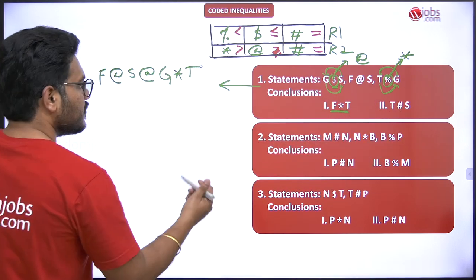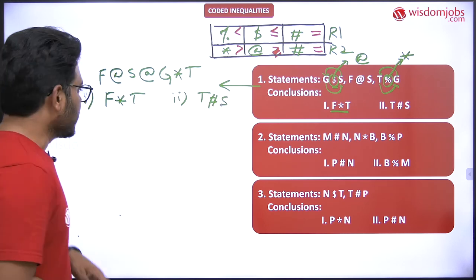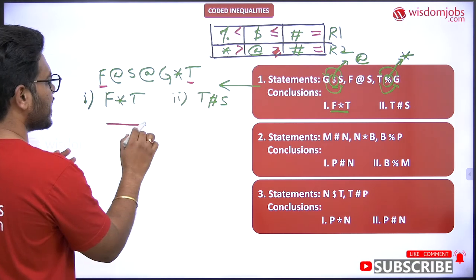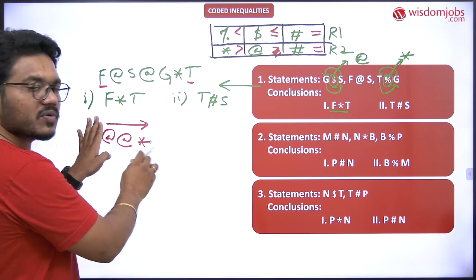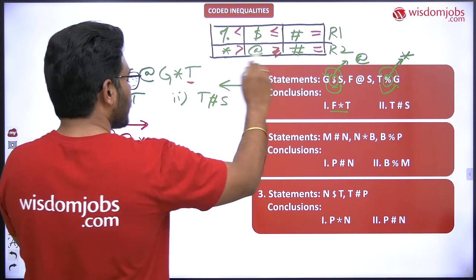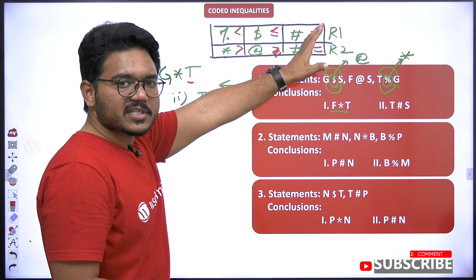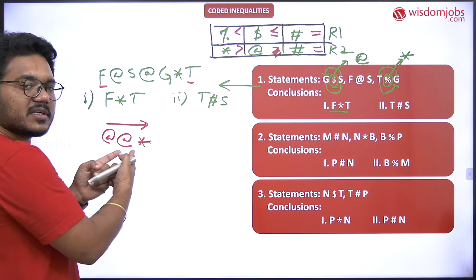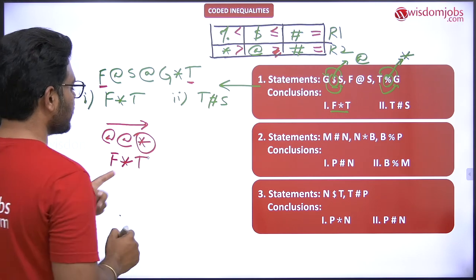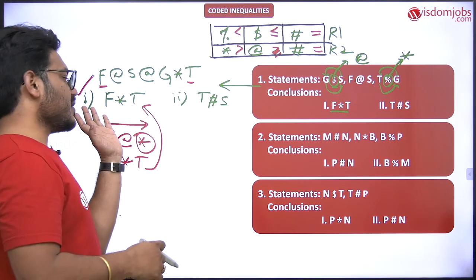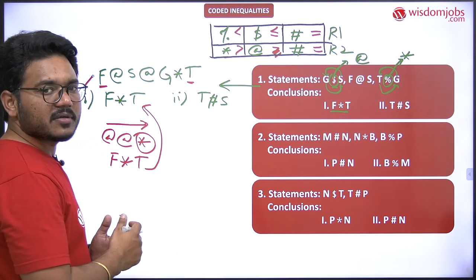Now let's check conclusion one: the relation between f and t. f is on the left, t is on the right — forward direction. The symbols in between are at the rate and star, both falling in the same row. Priority is given to star (the leftmost priority rule). Since it's forward direction, no need to check for alternate symbol — the concluded symbol is star. This matches conclusion one, so the first conclusion follows.